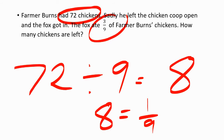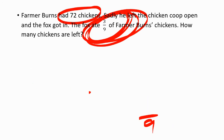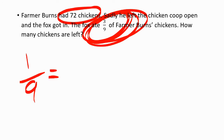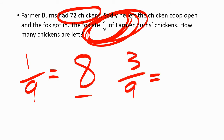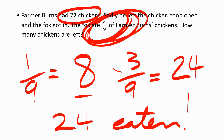Now we haven't finished yet — we've got to find three-ninths, not one-ninth. We found one-ninth, which was 8. So the next bit: if one-ninth equals 8, then three-ninths is going to equal 8 times 3, because it's three-ninths. So three-ninths is 8 times 3, which is 24. So we know that 24 chickens have been eaten. How very sad.